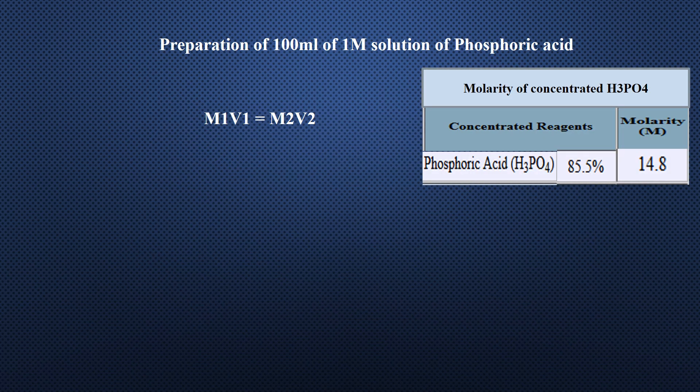Let's do the calculations to prepare 100 milliliters of 1 molar solution of phosphoric acid. M1 is the standard molarity taken from literature. As you can see in this table, the molarity of phosphoric acid is 14.8. Leave V1 as it is, as it is the required volume to be taken from the acid's bottle. Put M2 as 1, as it is the given molarity. Put 100 in V2 as we want to prepare 100 milliliters of 1 molar solution.